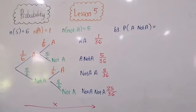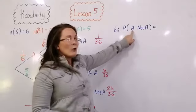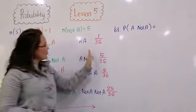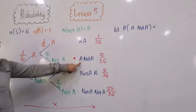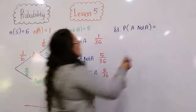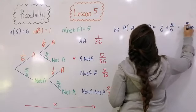B3 says: what is the probability of getting a four on the first roll and then not getting a four on the second roll? Getting a four was A, and not getting a four was not-A. So I want A followed by not-A. That gives 1/6 × 5/6 = 5/36.